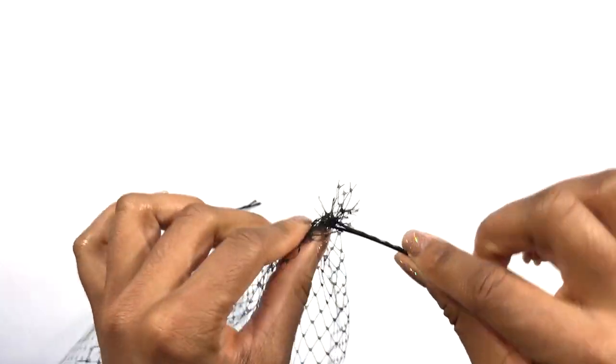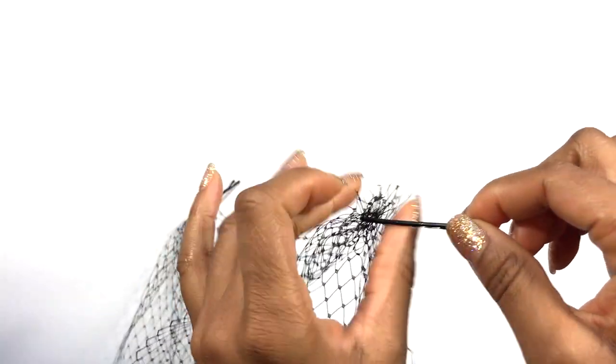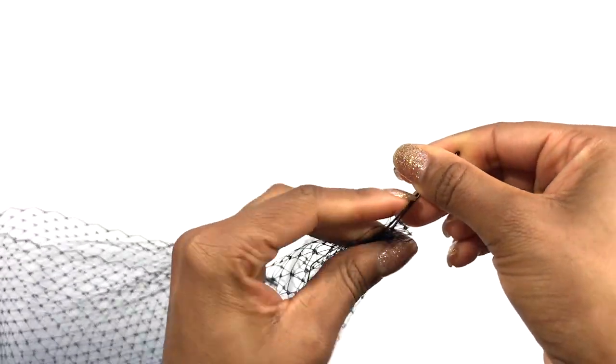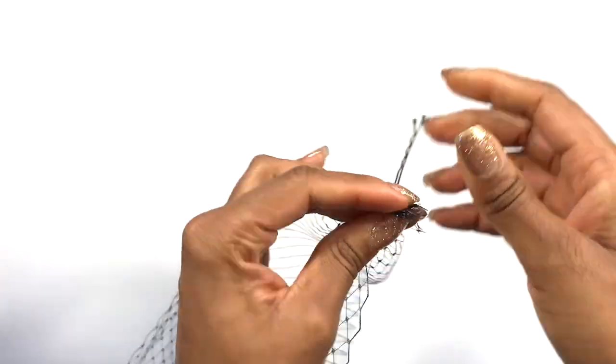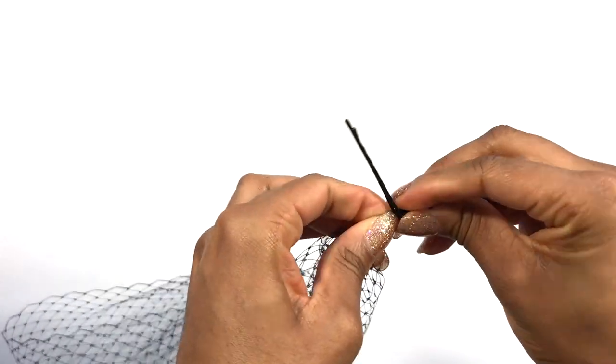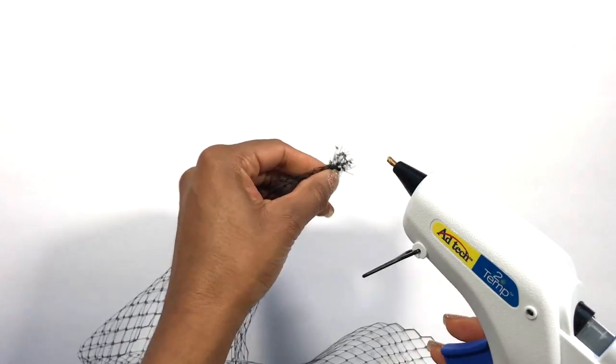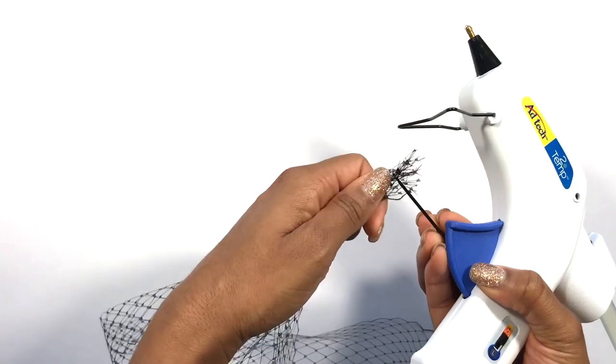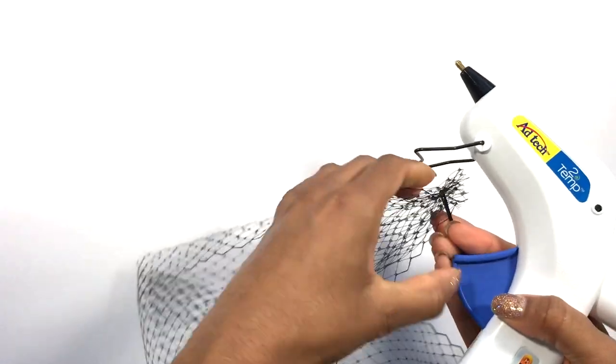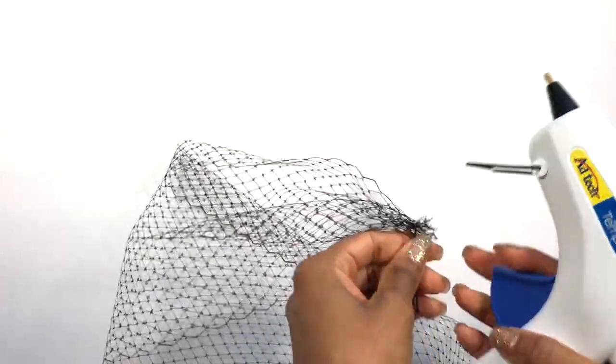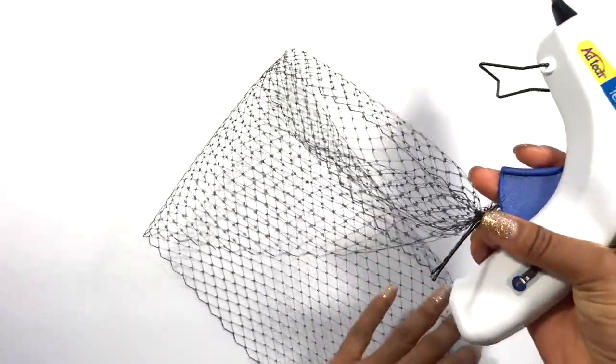Now once you get it like that, it will be pretty secure. It's not going to go anywhere unless you pull it. But to secure it, I mean you can sew it, but to make it easier, put a dot right at the end, and that way it's going to secure it. Now protect your fingers because you know that glue gun burns.